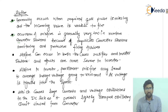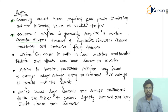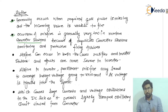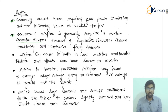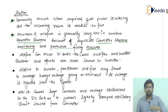The occurrence of misfire is generally very low in modern converter stations. Due to innovations and advanced power electronics devices used in modern converter stations, the probability of misfiring is actually reduced. This is also due to duplicate converter station monitoring and the protective firing of the thyristors.